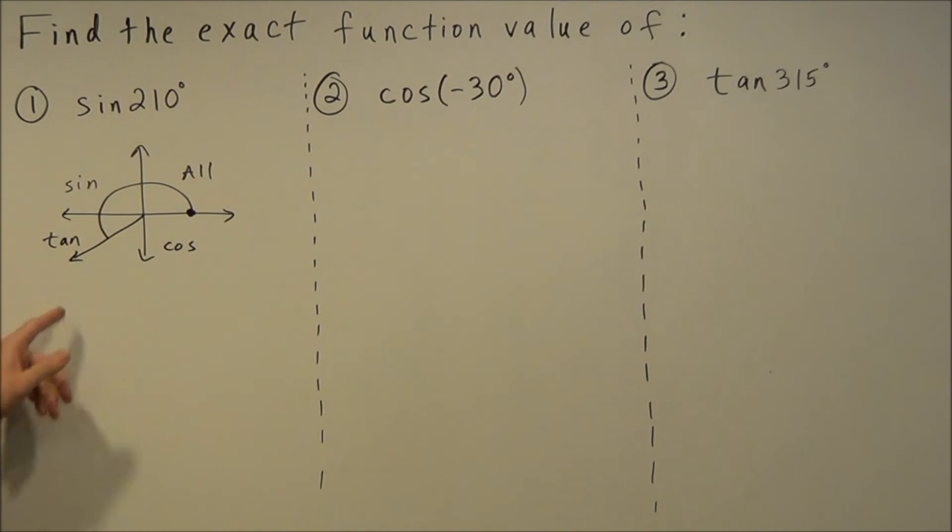If we look here, 210 degrees is in quadrant three which tells us tangent is positive in quadrant three. So we know this question right away, sine of 210 degrees, our answer is going to be negative.